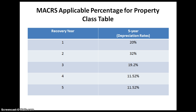The MACRS applicable percentage for property class table is more extensive than the table shown here, and typically consists of one to twenty-one years and recovery periods which include three, five, seven, and so on. Today we will be focusing on the recovery years for the five-year recovery period, showing the five recovery years and the depreciation rates for each. For this problem we will only be calculating the depreciation, not the tax deduction, which is what the MACRS method is typically used for.